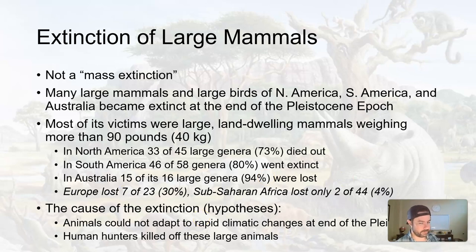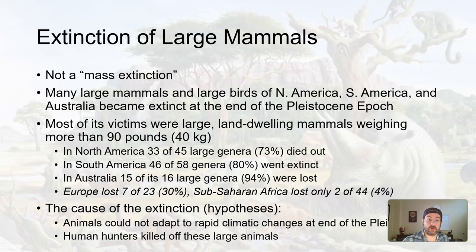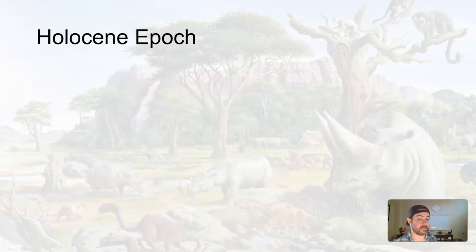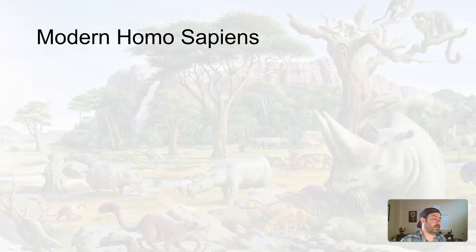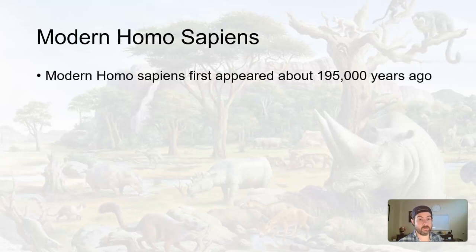The cause of this extinction — and these are just hypotheses — is that the animals could not adapt to the rapid climate changes at the end of the Pleistocene, or human hunters killed off large animals in large amounts, or some combination of both. The extinction of megafauna such as mammoths, mastodons, and saber-toothed cats all happened at the end of the Pleistocene and beginning of the Holocene.